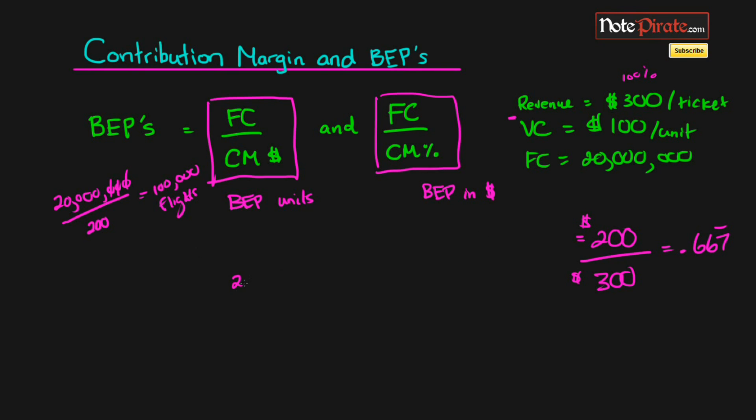And when we actually take our fixed costs and divide it by the contribution margin, we're going to get the breakeven point in dollars, which is going to be $30 million, roughly. Just because I didn't carry all the additional numbers and kind of rounded up.